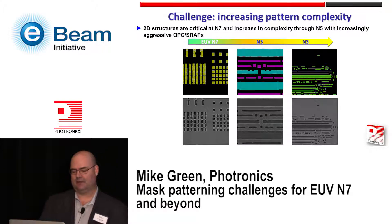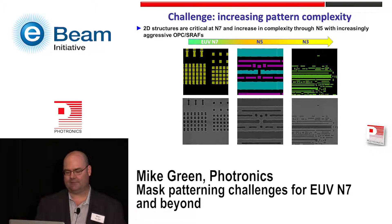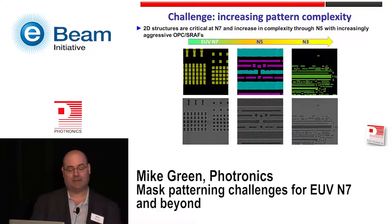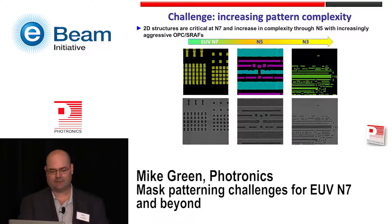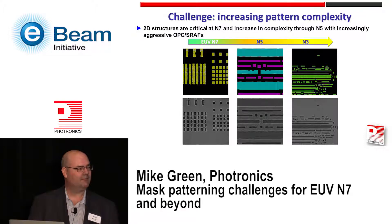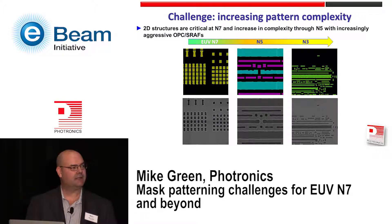What we're challenged with as we move past that is increased pattern complexity. With the departure from multi-patterning at N7, we're going to see more criticality of 2D structures, and that's only going to increase as we move into and through 5 nanometer, especially with increasingly aggressive OPC, specifically the SRAFs. Here's a test chip with some via structures we'd expect to see at N7, a metal layer with simpler SRAFs, and then more complex patterns aimed at N3 to stress the process development.